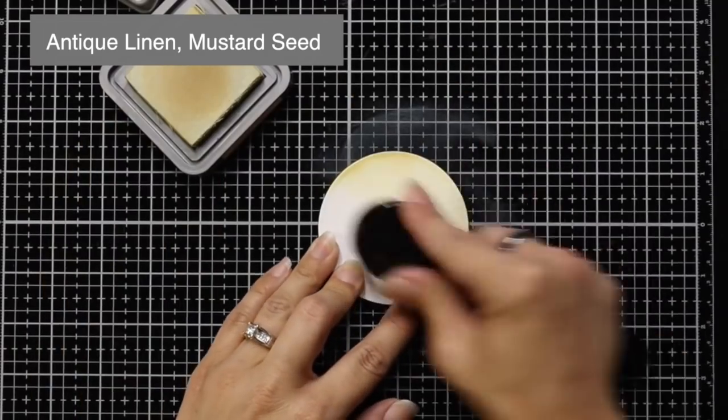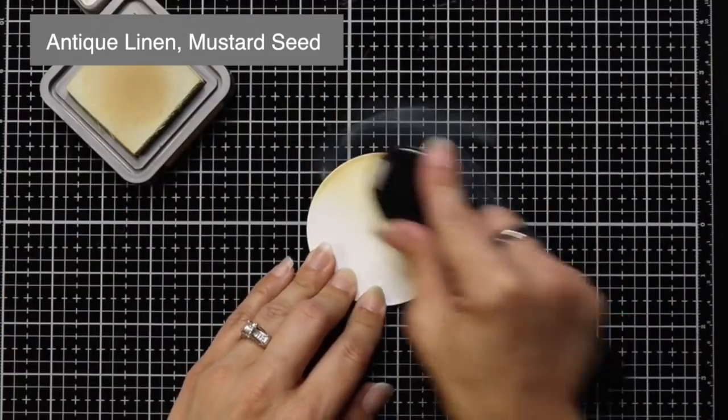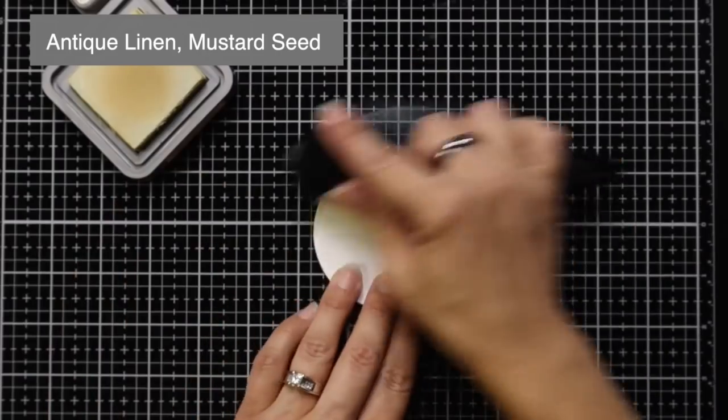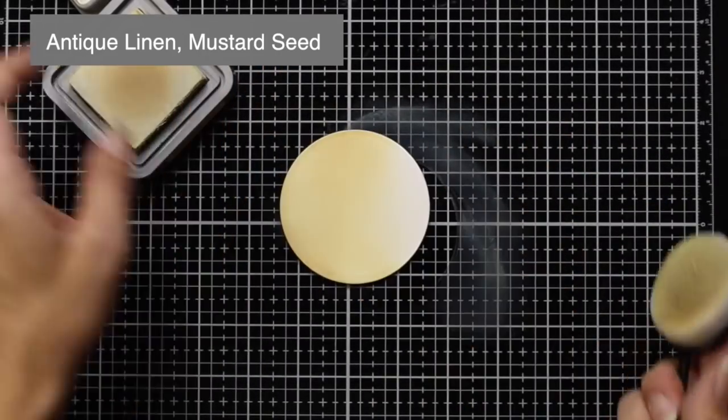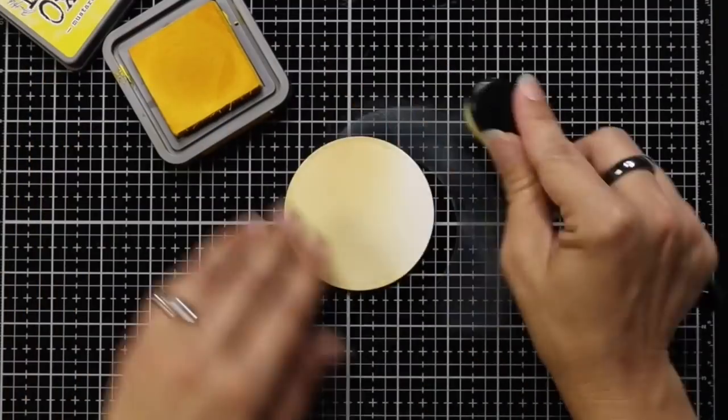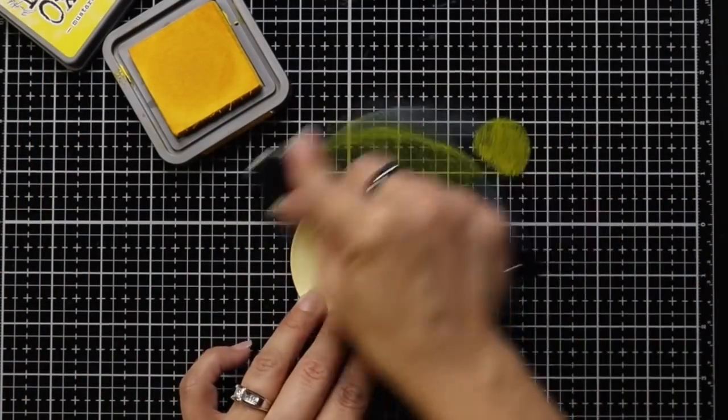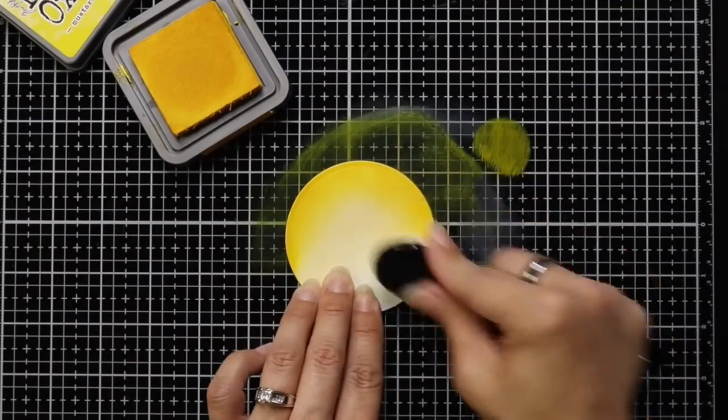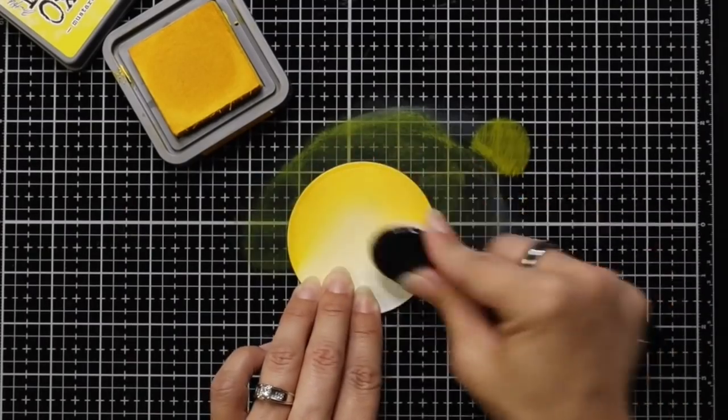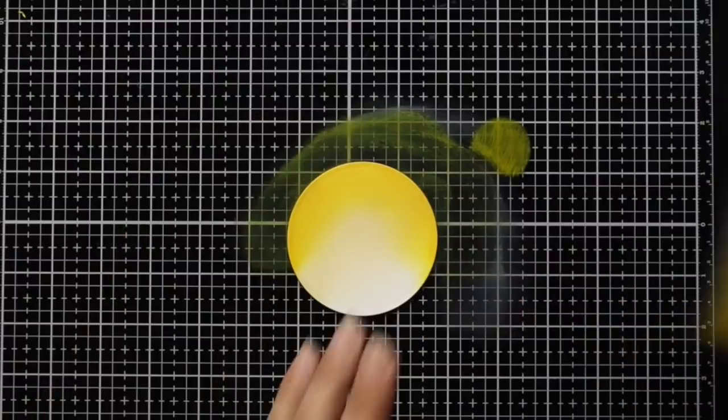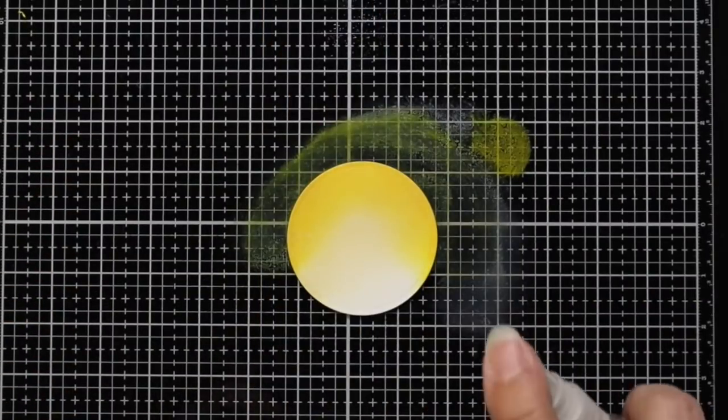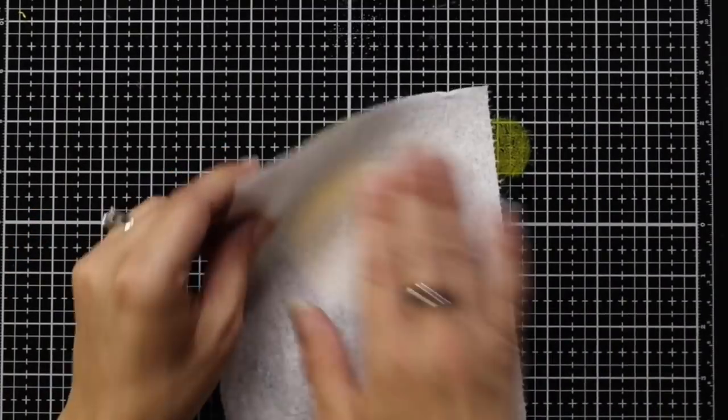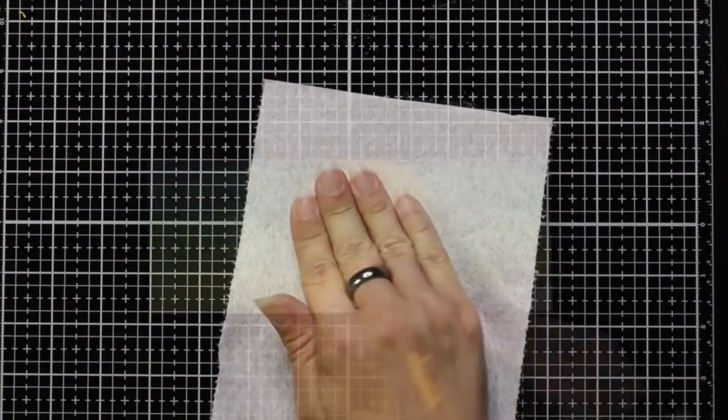So next I'm going to have the Moon to Ink Blend, since my inks and blending brushes are all out. And this is the circle die cut that I'm using Antique Linen as kind of the base color. And then I'll bring in Mustard Seed to go around the very edges. Then I'm going to take some clean water in a spritzer bottle, and I'm going to spritz my Moon a couple times, making sure I have some big droplets on there, and then dabbing that up with a paper towel.